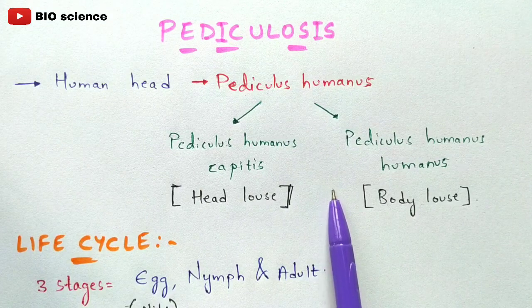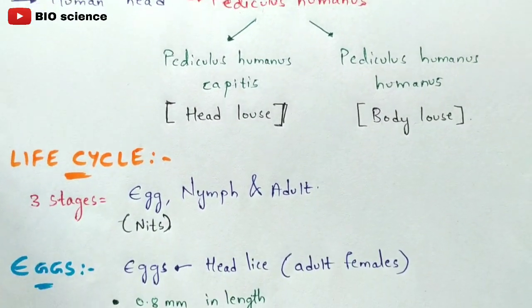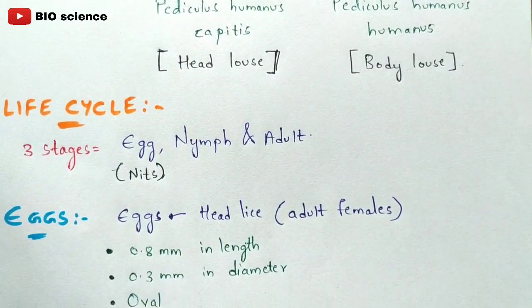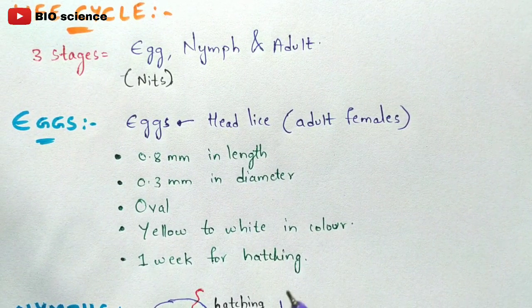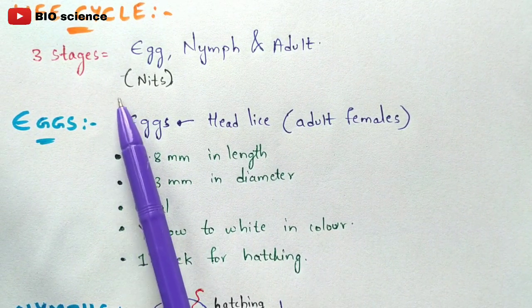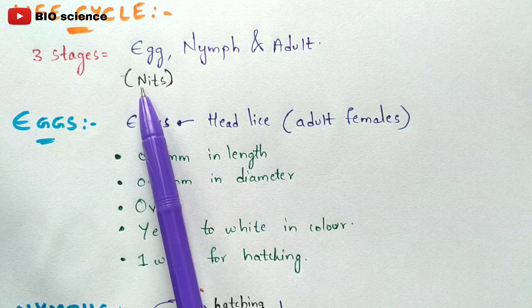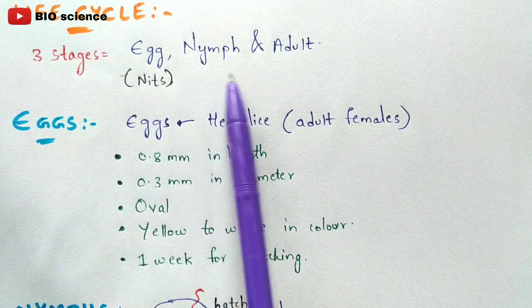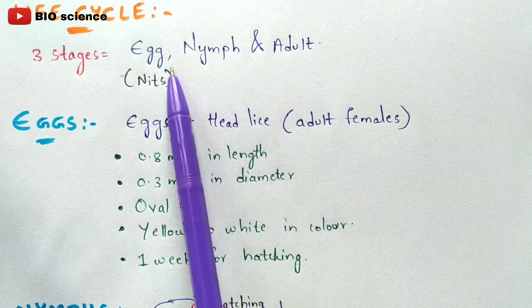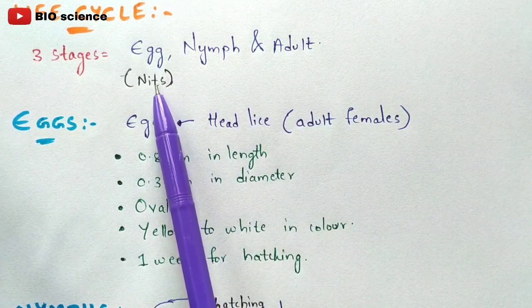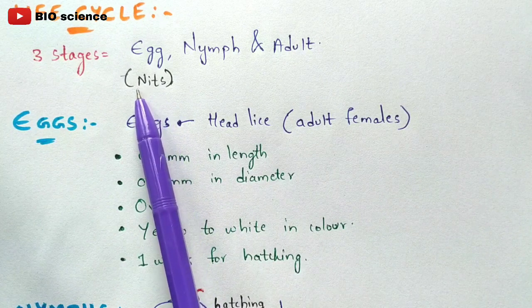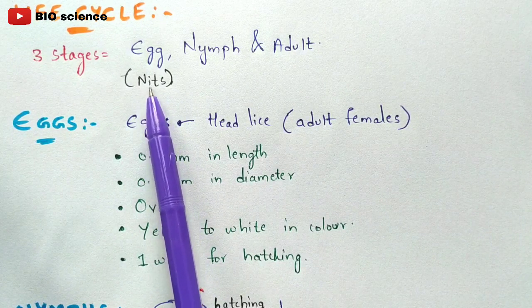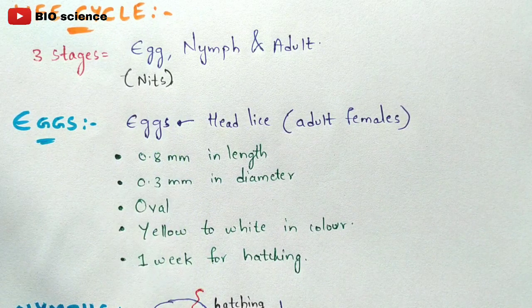The life cycle occurs in three stages: eggs, nymphs, and adults. Scientifically, these eggs are called nids. Nids are the eggs which are laid by the head louse or body louse.